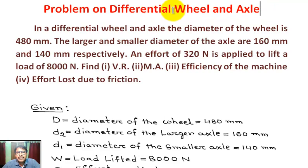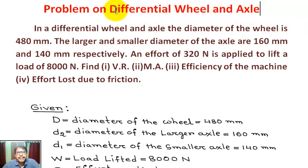Differential wheel and axle is a simple lifting machine. Simple lifting machine means load is lifted at one point of the machine by the application of effort applied at another point of the machine.